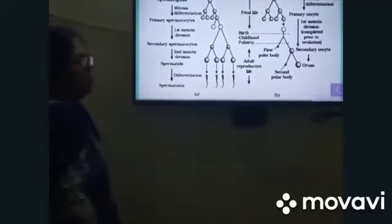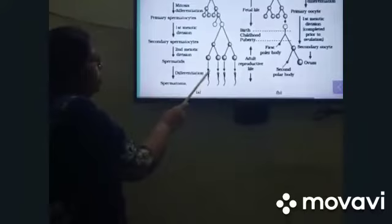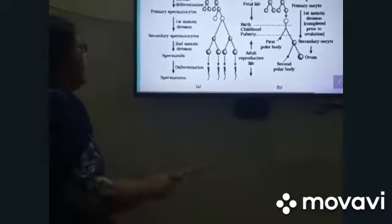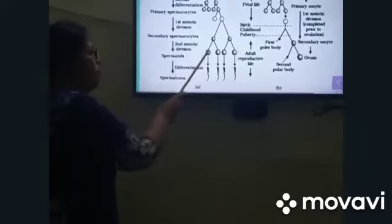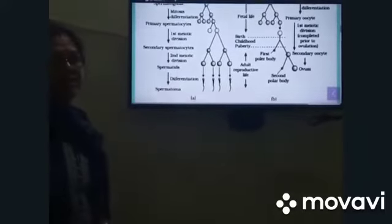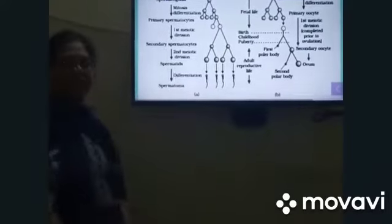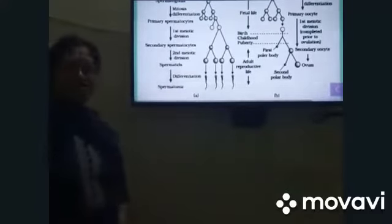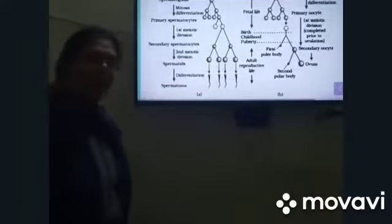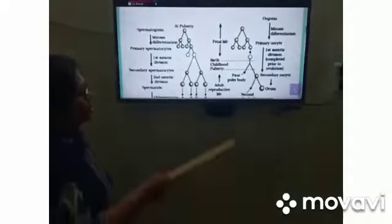They are undergoing differentiation to form Spermatozoa. And this process from Spermatid into Spermatozoa is called Spermiogenesis and it is only a part of Spermatogenesis. This whole process, where is it taking place? It is taking place in the seminiferous tubules of the testis of the male.